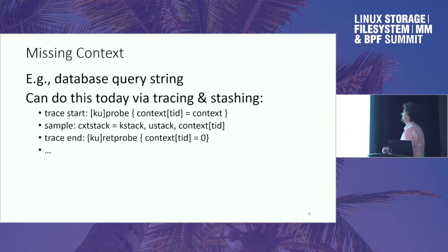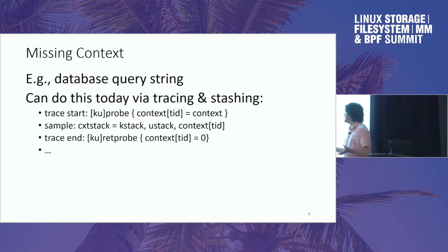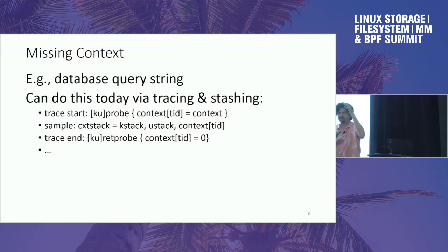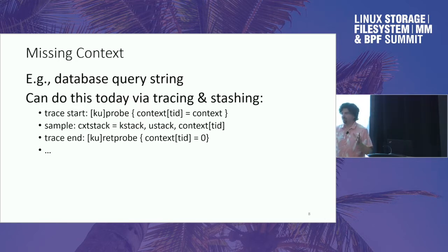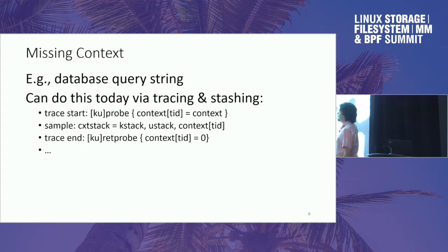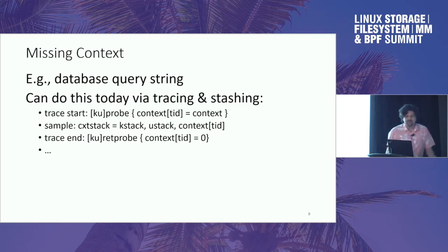Next problem: missing context. Stack traces and flame graphs are fantastic — I can understand the big picture of my code — but they're missing stuff, like the database query string. The code is supposed to answer why: why am I here, why is my code on CPU, why am I calling this stuff? That would be useful — database query string, user IDs, whatever Netflix movie title you're watching. You can do this today via tracing and stashing: trace the start of something, stash it to the thread ID, include it when sampling, then clear it. But I want to do it just in sampling with lower overhead — without tracing.